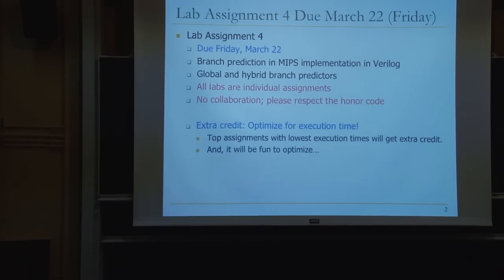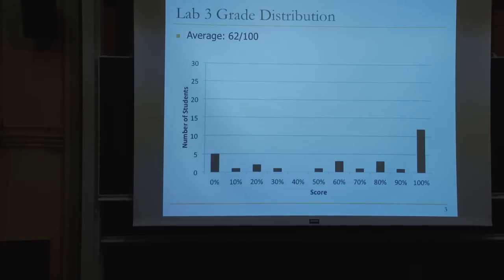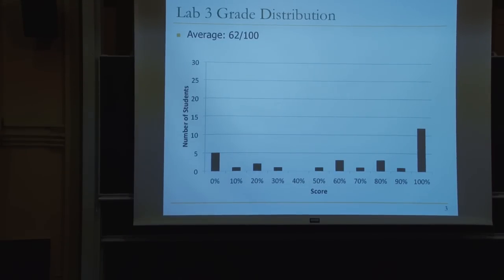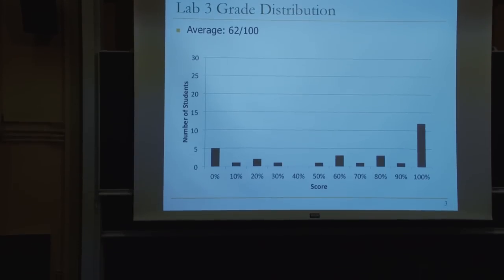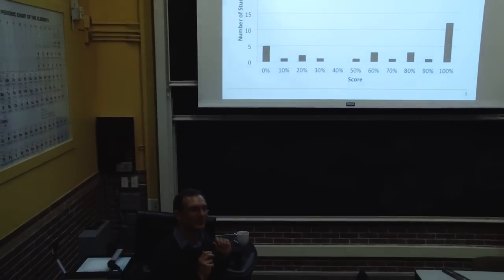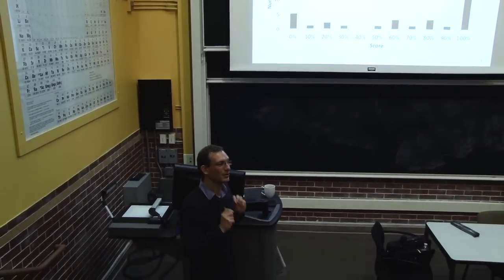Here is the lab three grade distribution — it's a kind of weird distribution. There are quite a few of you who did quite well; I believe 11 or 12 people got a perfect score on lab three. The average was 62, which is a little bit different from lab one and lab two. Labs are getting harder. Lab four will be easier if you've done well on this lab.